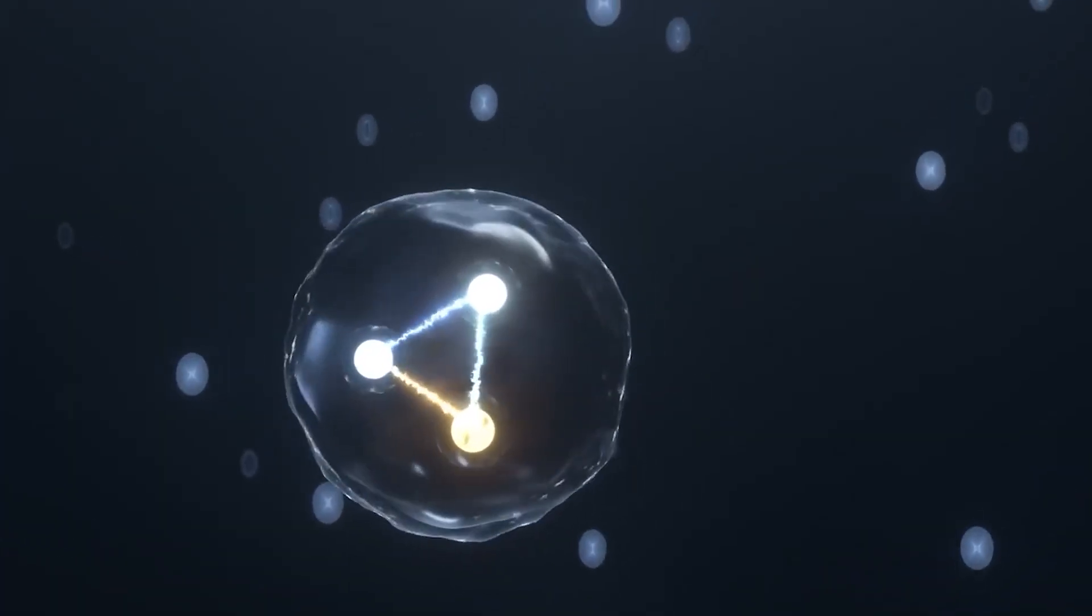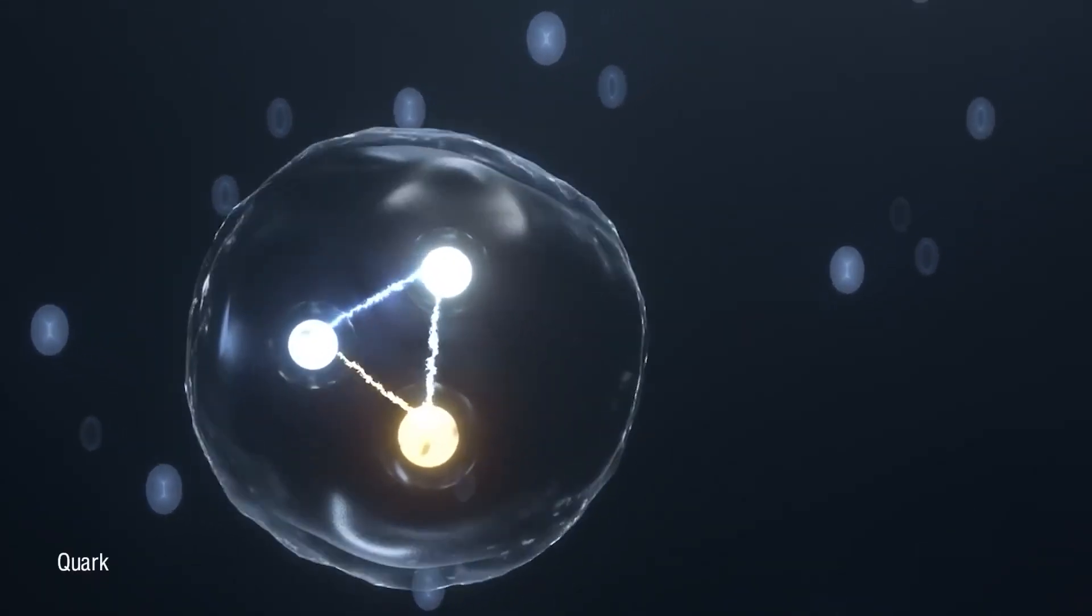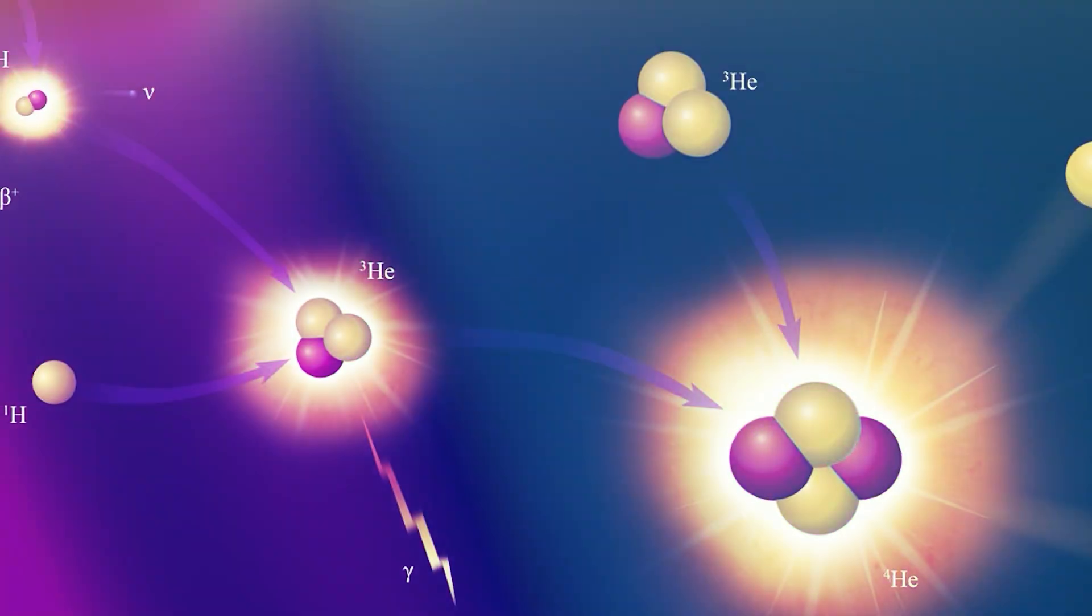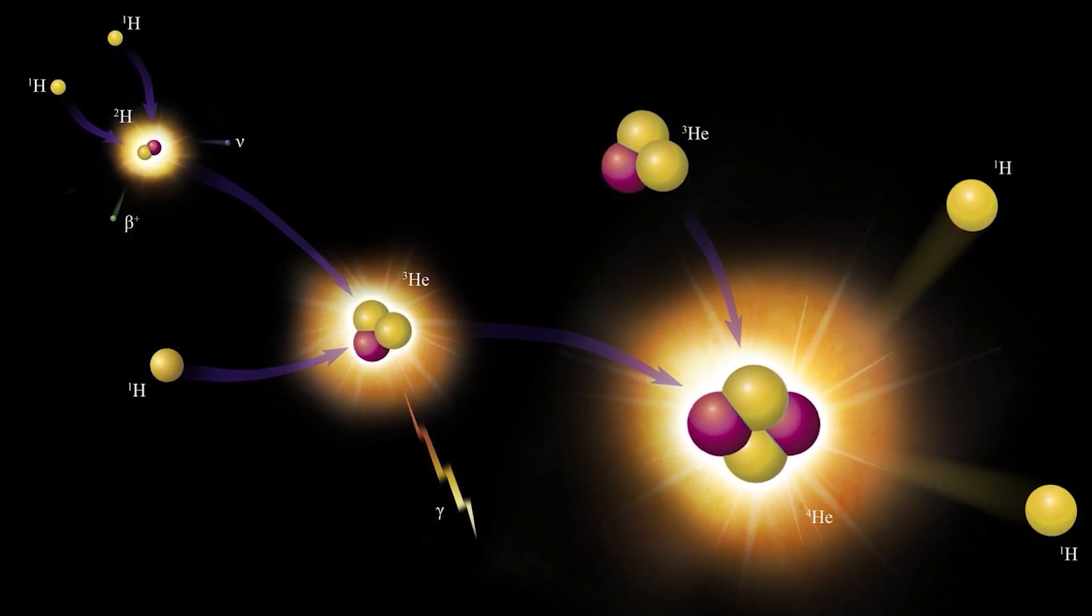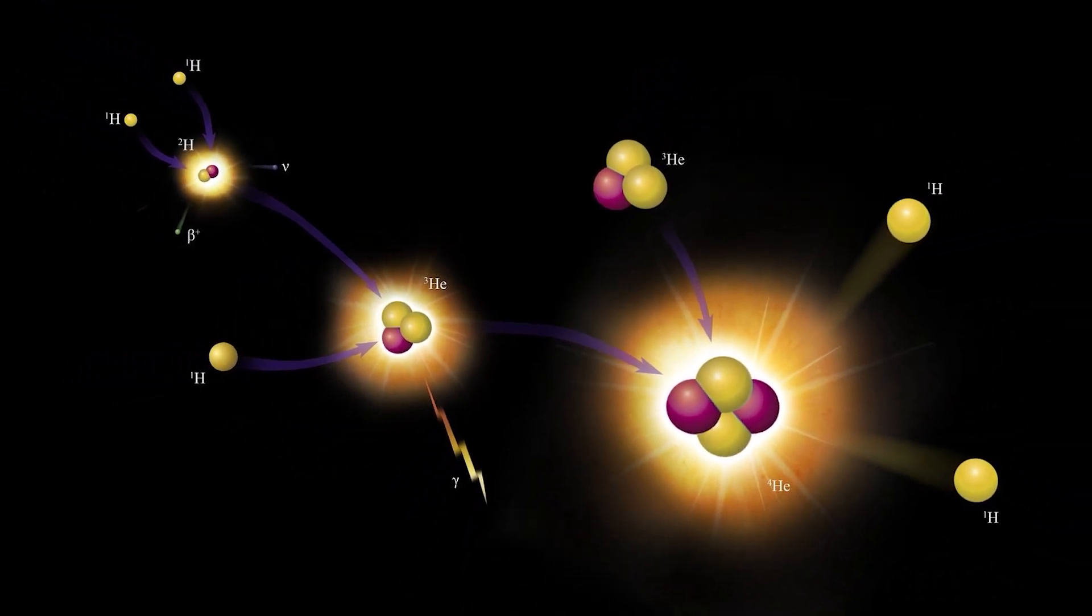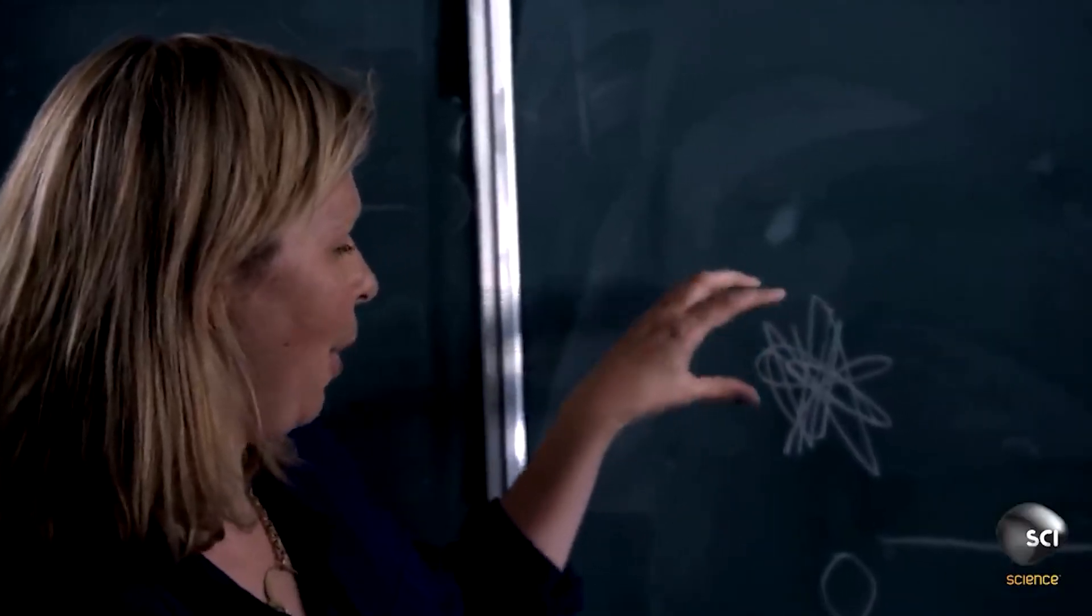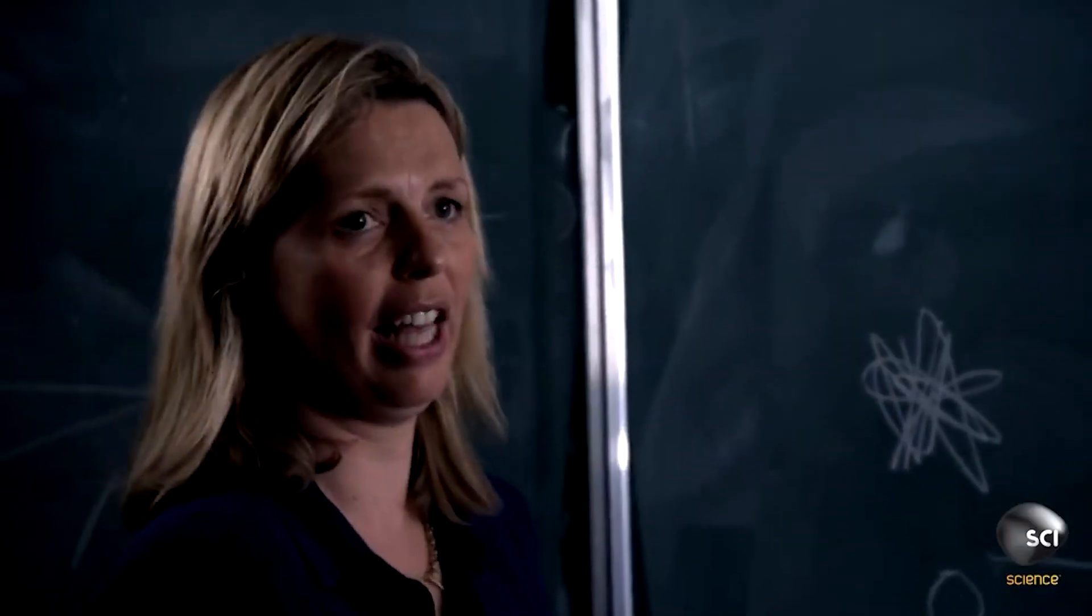Hadrons are tiny particles inside atoms, made up of even smaller parts called quarks. They stick together because of a strong force, kind of like how atoms stick together because of a force called electromagnetism. Some common hadrons are protons and neutrons, known as baryons, and other ones like pions and kaons.